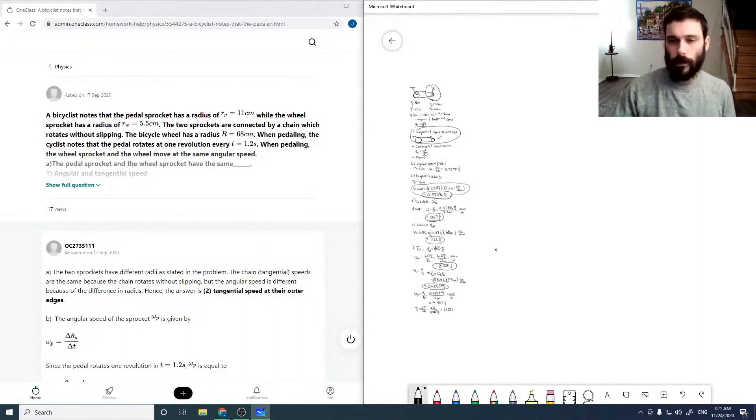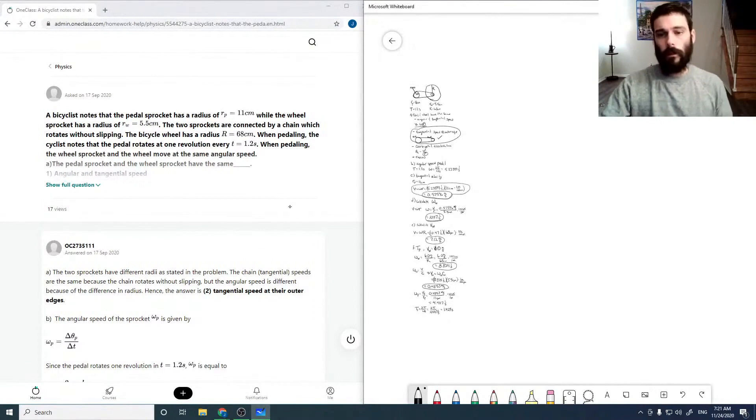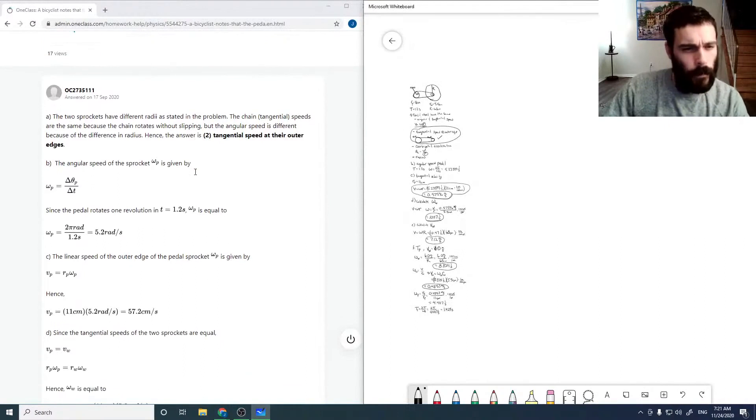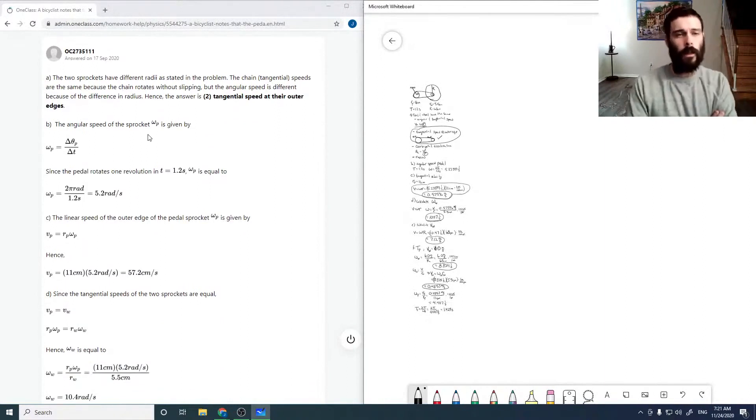So that one is significantly less legible when I shrink it down. But we can go through the solution here. So they have the same tangential speed at their outer edges. The angular speed of the sprocket is going to be found from the period as 5.2, which is right there. So that looks good.